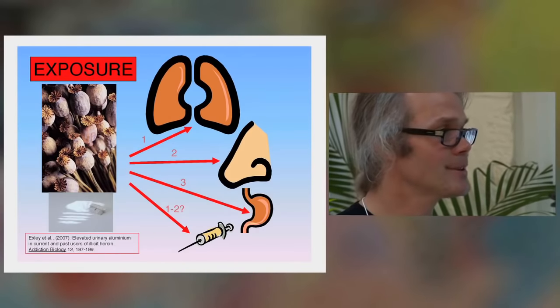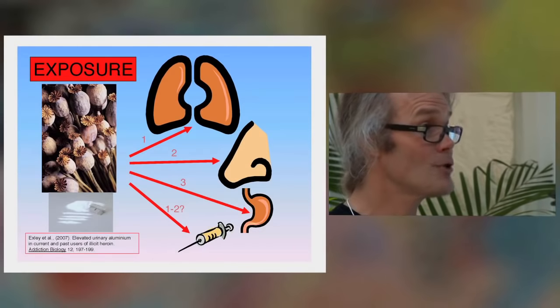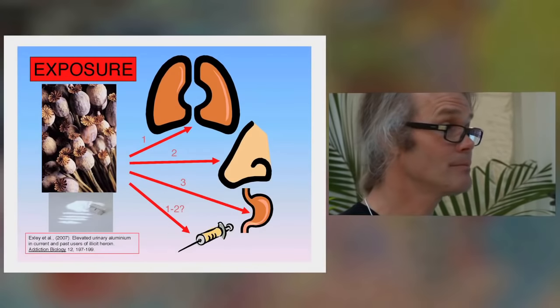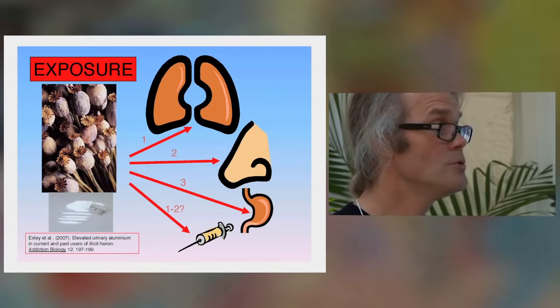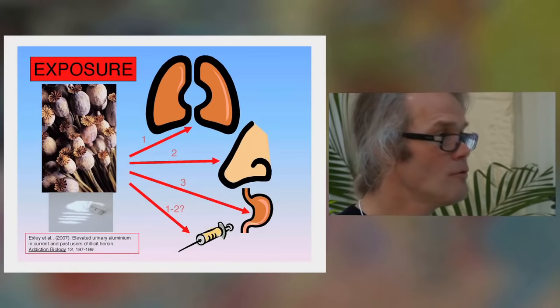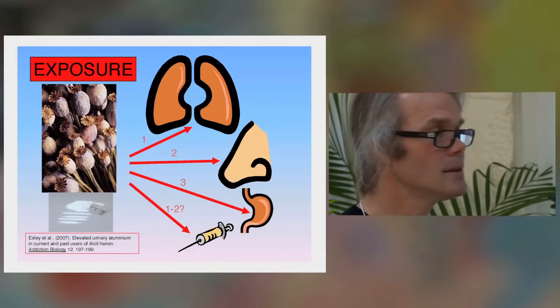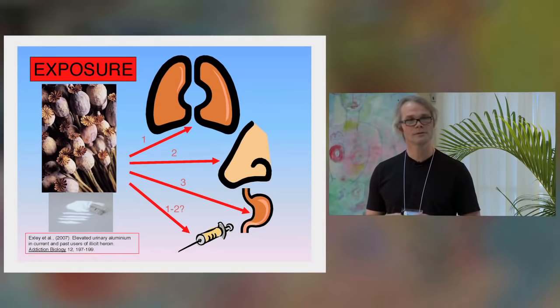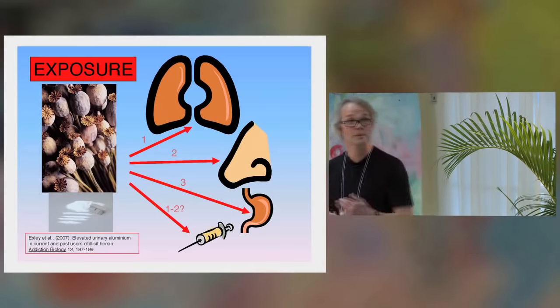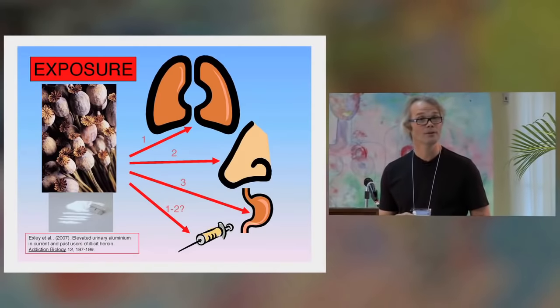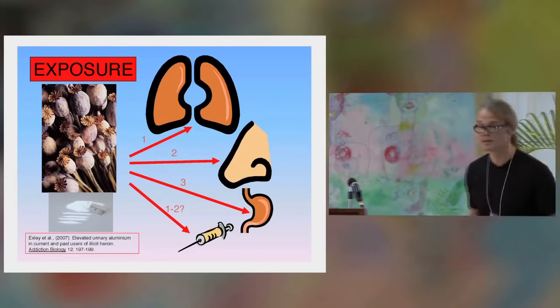But heroin contains large amounts of aluminium. People who die of heroin overdose in their 20s, we know they have all of the early signs of Alzheimer's disease in their 20s. Whether that's because they're also taking in aluminium, I don't know. But it could be an interesting coincidence.